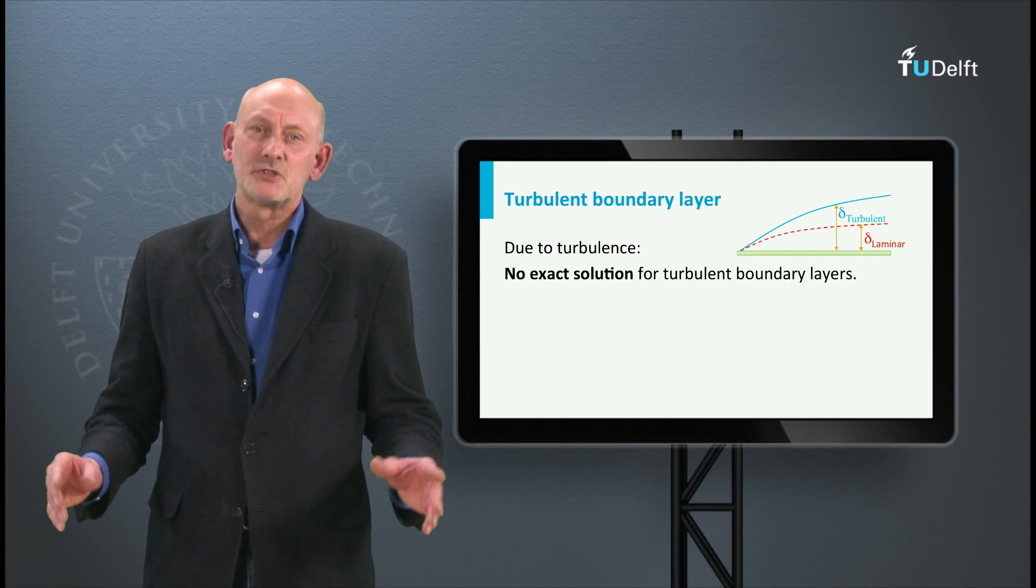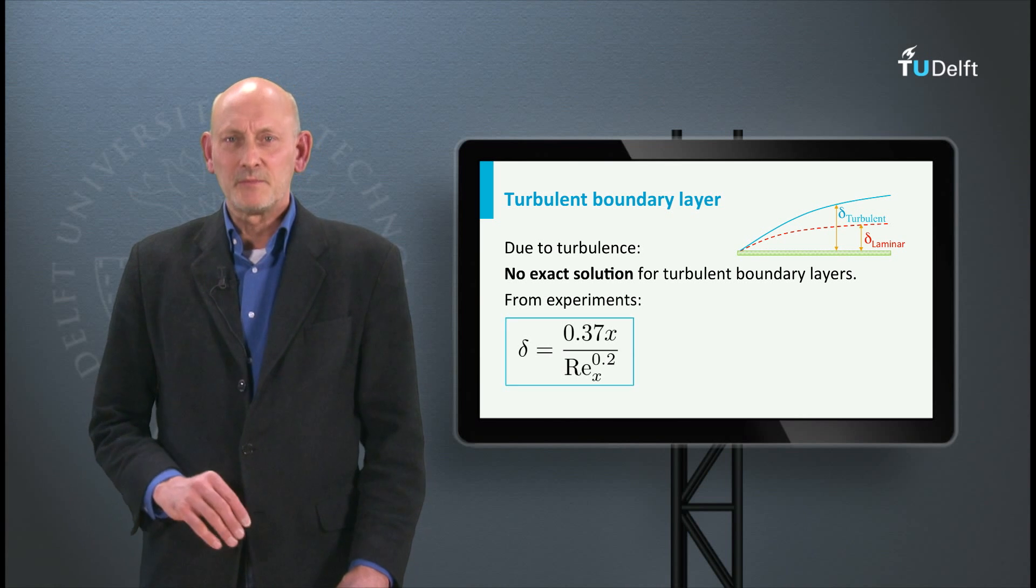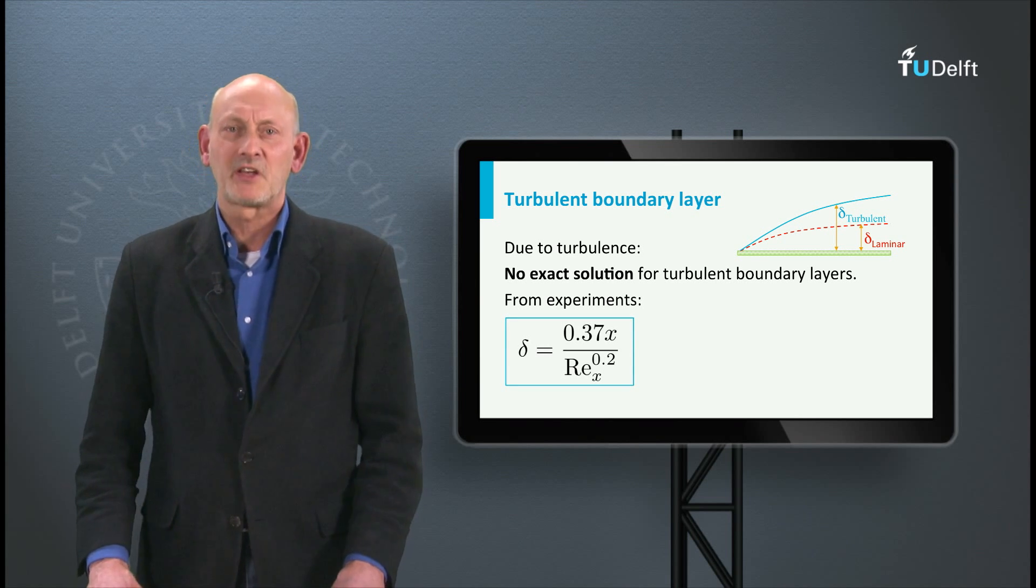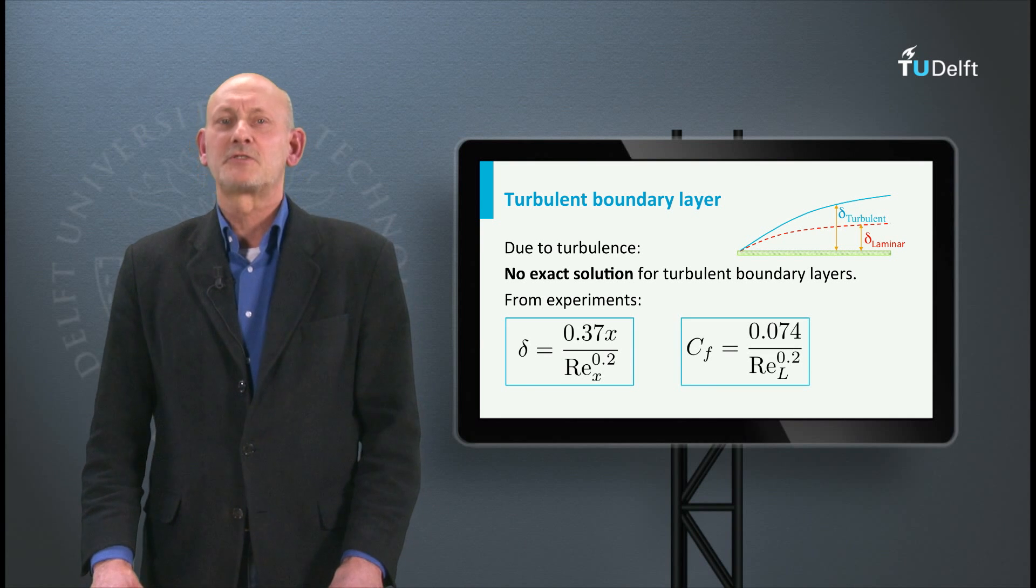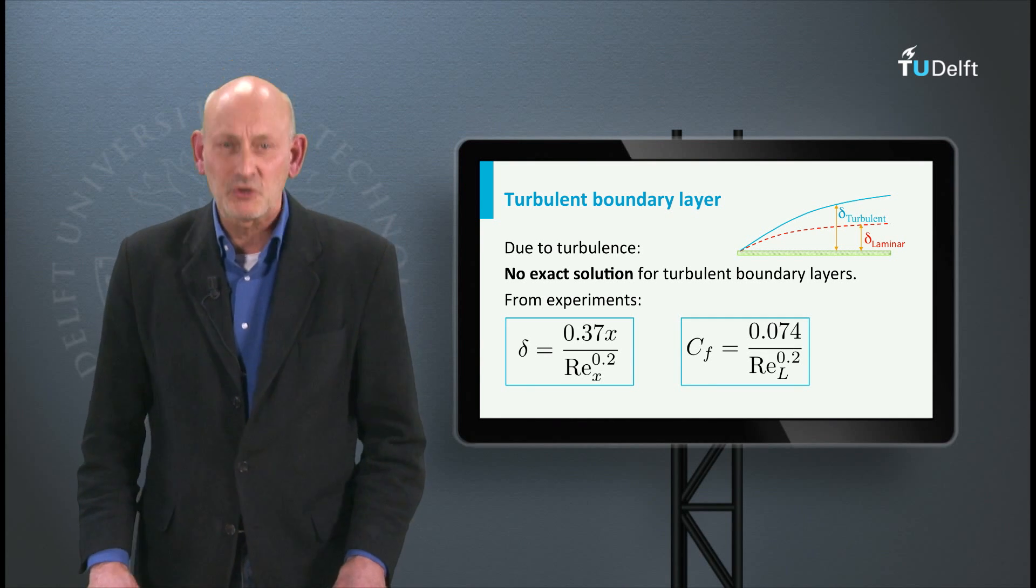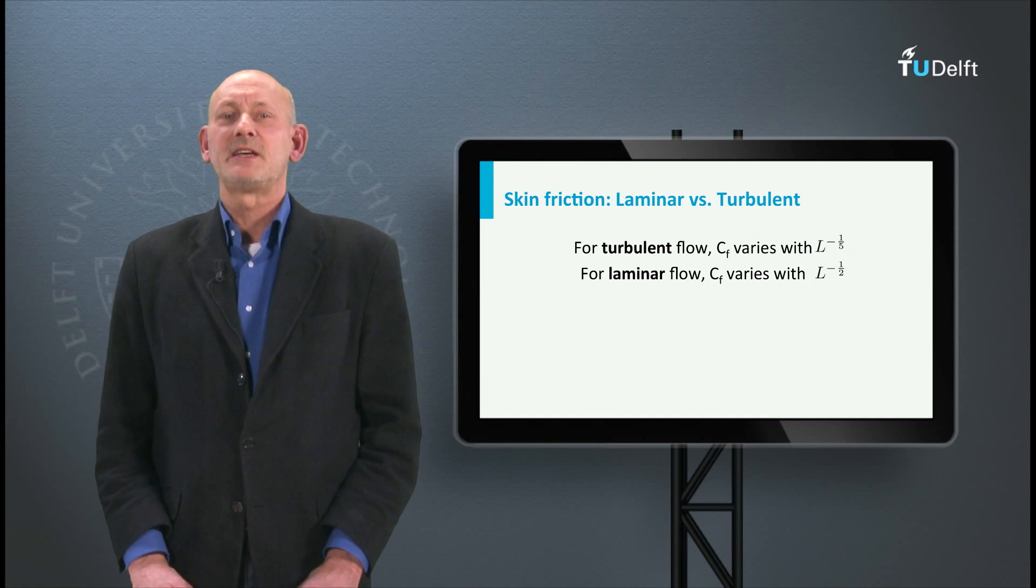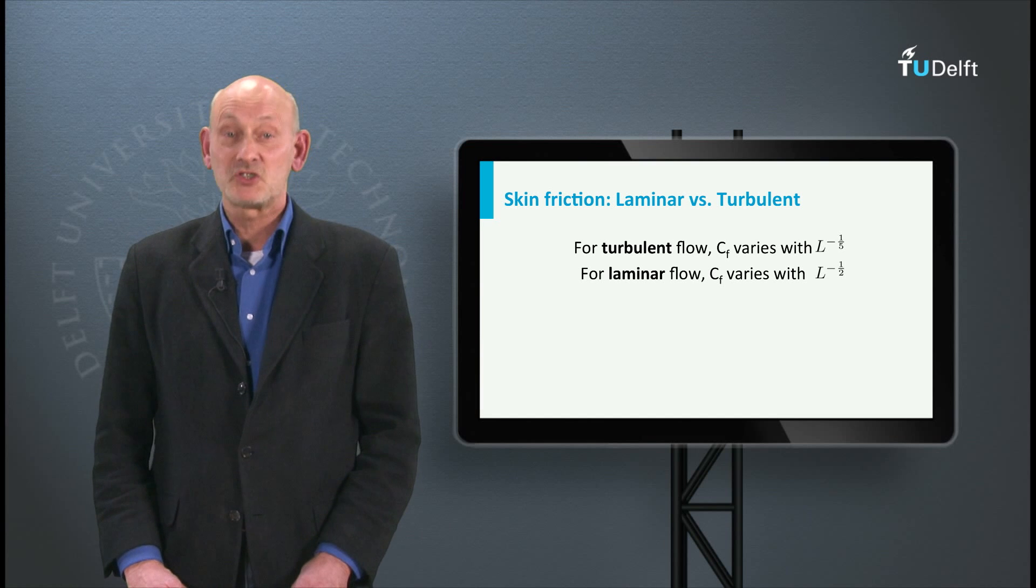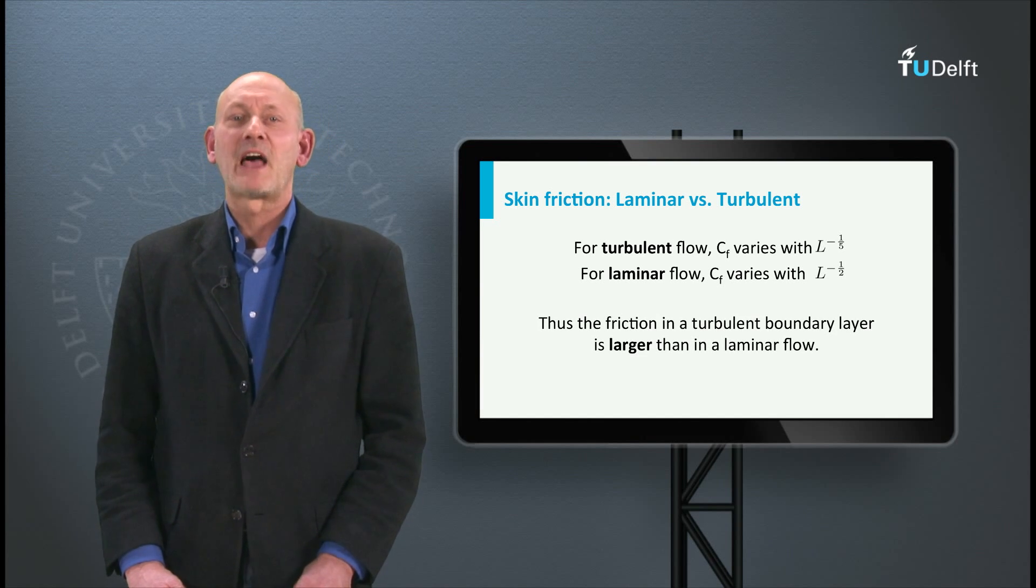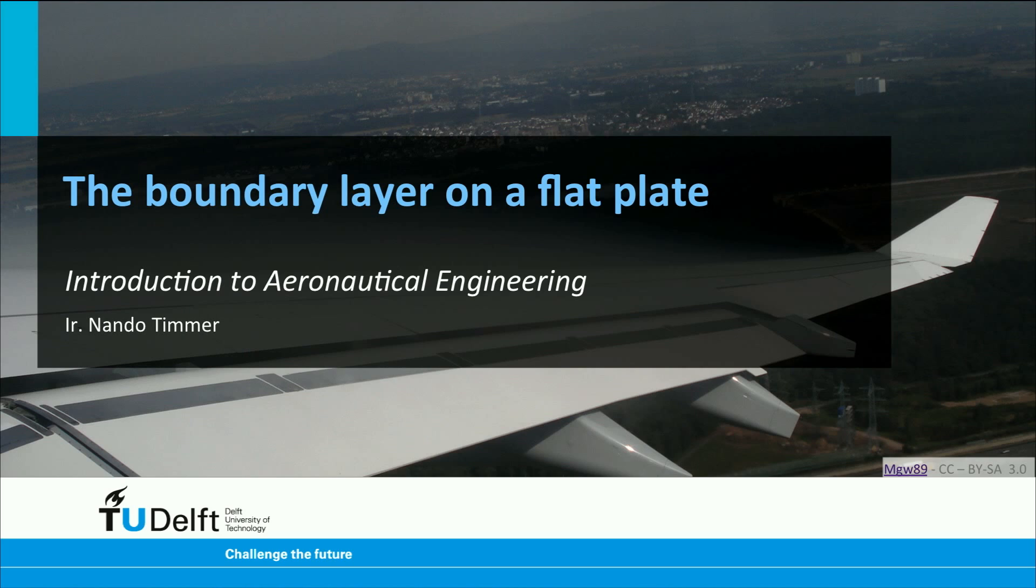Now unfortunately there is no exact solution for the turbulent boundary layer. But experiments showed that the boundary layer is much thicker than for the laminar case and that the skin friction coefficient inversely varies with the Reynolds number to the power 0.2. So if we put the two together we see that the friction coefficient in a turbulent flow is much higher than in a laminar flow. A turbulent flat plate will have a much higher total skin friction drag.